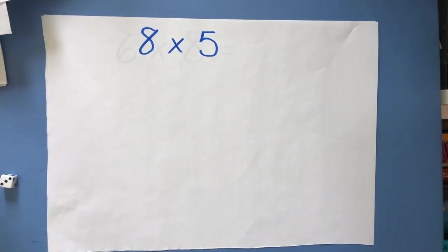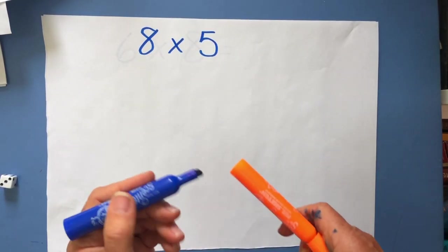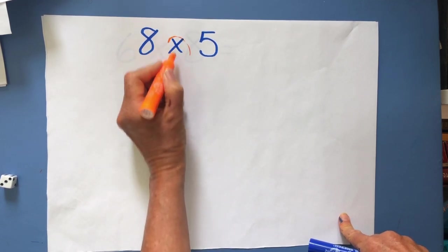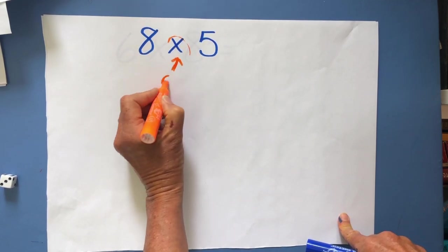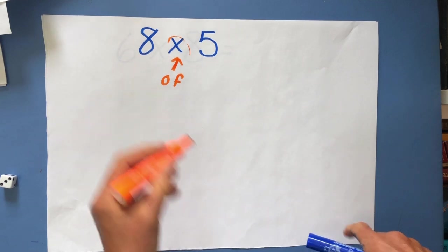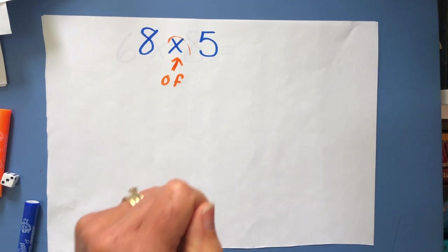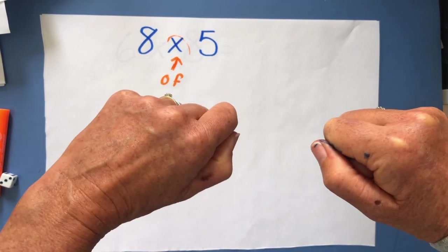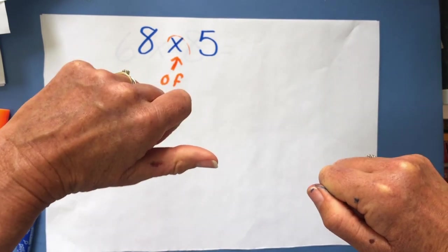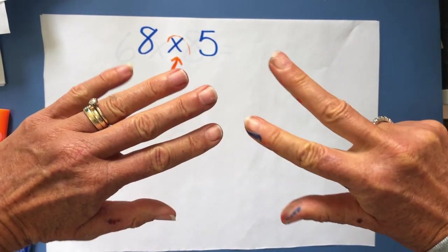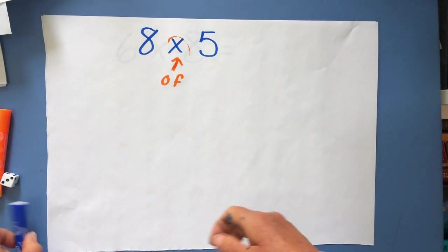The first problem is eight times five, which is really eight groups of. This symbol right here means of. Okay, so we have eight groups of five. So if you wanted to use your fingers first, we're counting by fives and we're going to have eight fingers. So watch. Ready, go. Five, ten, fifteen, twenty, twenty-five, thirty, thirty-five, forty. So the answer here is forty.